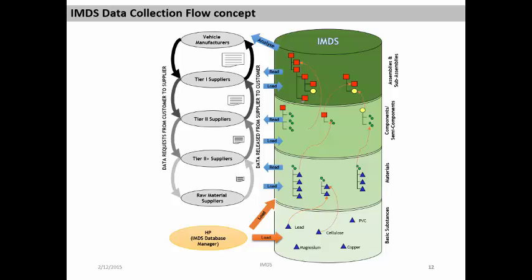If you are a Tier 2 supplier supplying to a Tier 1 supplier, the Tier 1 can add some parts to your part, make a bigger part, and then submit to the OEM. Finally, it reaches the OEM and they accept or reject the part. If they reject the part, there should be some reason related to non-compliance with regulations, and then we have to rework and resubmit. This is how data flows from the substance level to the assembly level up to the OEM.